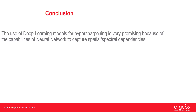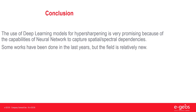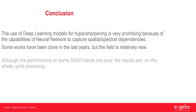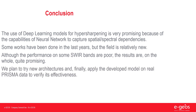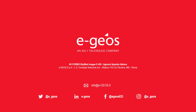In conclusion, the use of deep learning models for hypersharpening is very promising, because of the capabilities of neural networks to capture spatial and spectral dependencies. Some works have been done in the last years, but the field is relatively new. Although the performance on some SWIR bands is poor, the results are on the whole quite promising. We plan to try new architectures and, finally, apply the developed model on real PRISMA data to verify its effectiveness. Thank you for your attention.